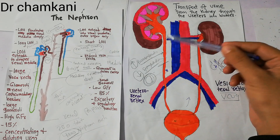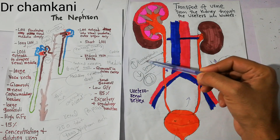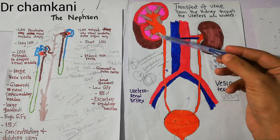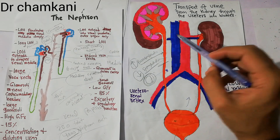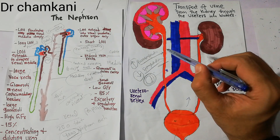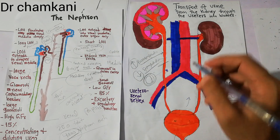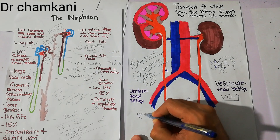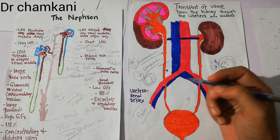The ureter is supplied by different nerves. We have discussed the innervation of the ureters, and there are pain fibers present in the ureter as well.